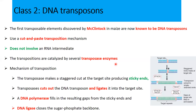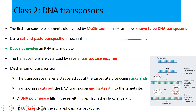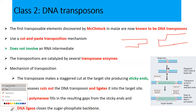The mechanism is straightforward: transposase enzymes make a staggered cut at the target site, which produces sticky ends. If this is the target site, it cuts and produces overhanging sticky ends. These sticky ends are produced by the staggered cut, and the new DNA is inserted inside at that location.